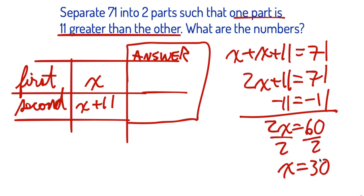In most algebra classes or topics, hey, we're done, but we're not here because it wants, what are the numbers? So it's going to be 30 and x plus 11, that'd be 30 plus 11, 41. And there you go.